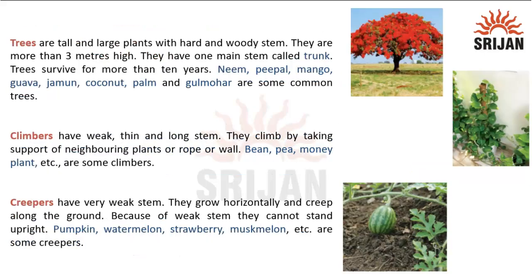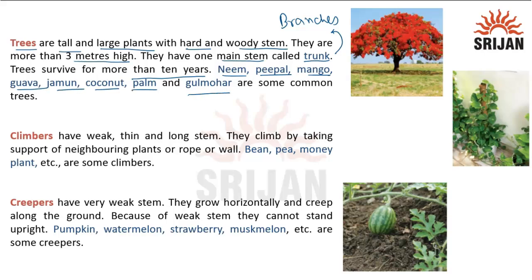Trees are tall and large plants with hard and woody stems. They are more than 3 meters high. They have one main stem called the trunk, and they have other branches. Trees survive for more than 10 years. Neem, peepal, mango, guava, jamun, coconut palm, and gulmohar are some common examples. This is gulmohar, and we can say that this is a tree.